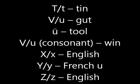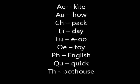Now let's look at what happens when you put some letters together. AE together makes an I sound, like kite. AU together makes an O sound, as in how. CH together makes a K sound, as in pack. EI together makes an A sound, as in day. EU together makes a EU sound. OE together makes an OI sound, as in toy. PH you would pronounce as in English. QU you would pronounce as a Q sound, like quick. And TH you would separate, as in pot-house.